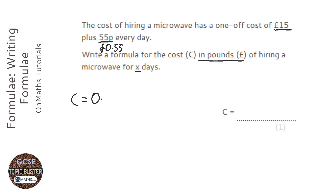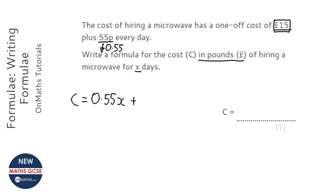To work it out, I'm going to times 0.55 by the amount of days, which we don't know, so we call it X. But then we've got to pay this 15 pounds as well, so I'm going to add the 15 pounds onto it — and that's our formula.